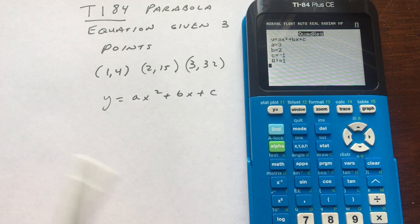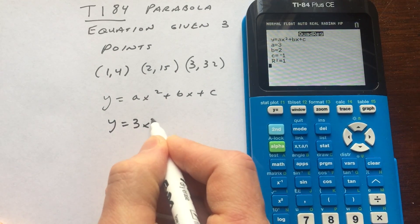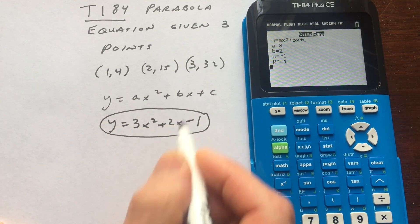And you've got the equation of your quadratic right here. So if I was to write it, it comes out to Y equals 3X squared plus 2X minus 1. And that's your equation.